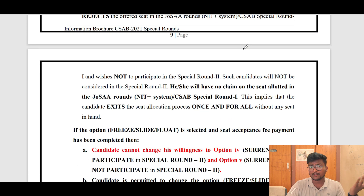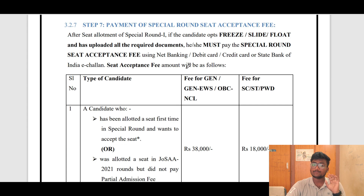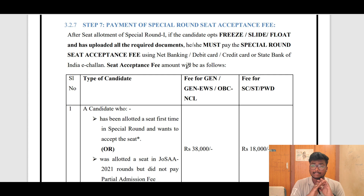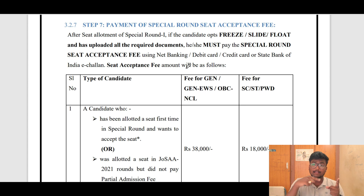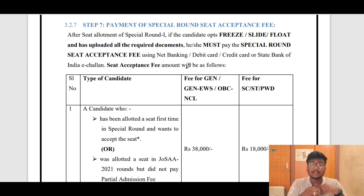If you didn't get seat allotment, you have to wait for the second round — it will automatically be in Float. After that, you need to upload the documents and then comes the Payment of Special Round Seat Acceptance Fee. Those who already paid the partial admission fee and seat acceptance fee during JOSA need not pay any amount now. Only a few people — those who are newly allotted and those whose seat was cancelled — will have some special cases.